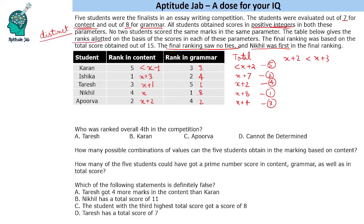Now, what are the possible values of X? The maximum marks in content is 7. If X equals 4, Ishika gets 7 — valid. Can X equal 3? Then Ishika gets 6, with values 6, 5, 4, 3 possible, and less than X minus 1 means less than 2, so 1 is possible. If X equals 2, Karan's score would need to be less than 1, which is impossible since scores are positive integers. So the two possible values of X are 3 and 4.